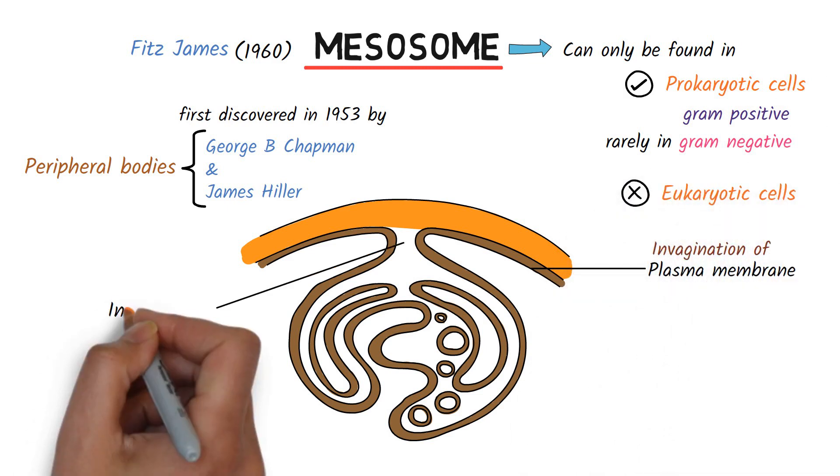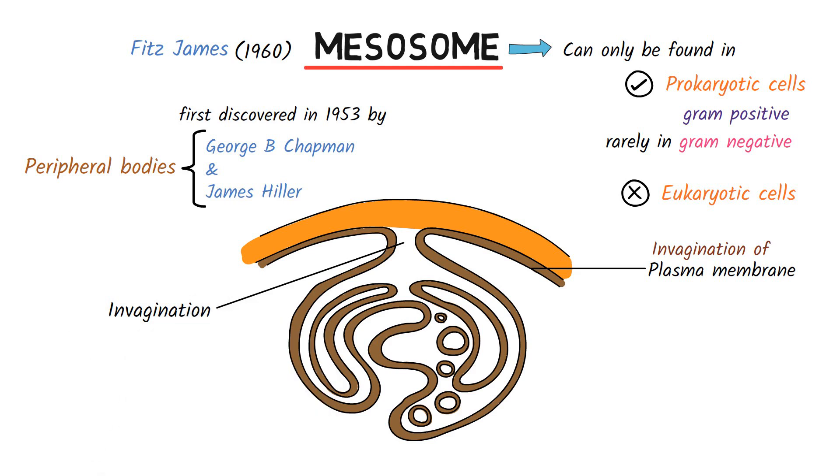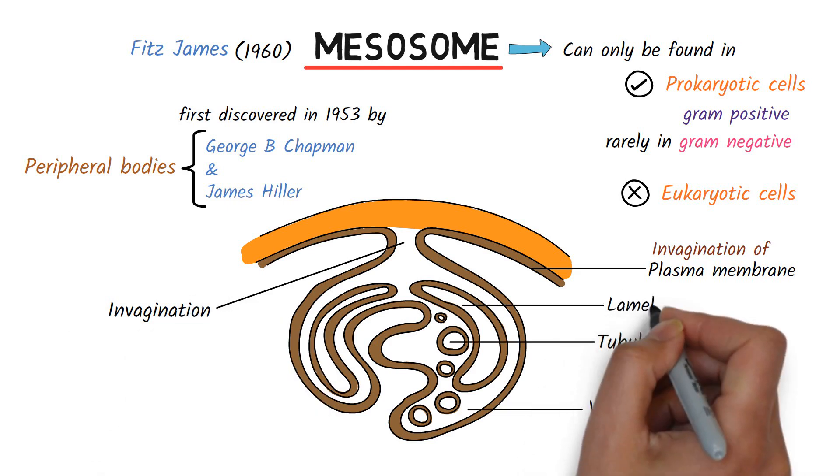The invagination of the plasma membrane may be in the form of vesicles, tubules, and lamellar structures.